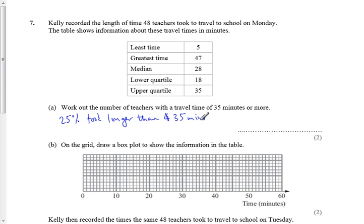So a quarter of the teachers took longer than 35 minutes, and there were 48 teachers overall. The upper quartile represents three quarters, the lower quartile represents a quarter, and the median is the halfway point. So that means 12, a quarter of 48, took longer.